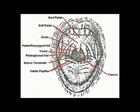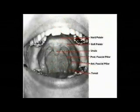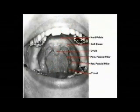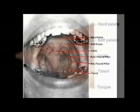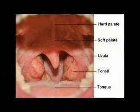Here you see the orientation of the oropharyngeal airway: hard palate, soft palate, the uvula. A couple of different photographs and diagrams show the different portions. Again, notice the uvula, tonsils, and the tongue orientation.